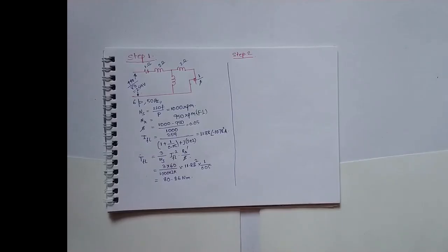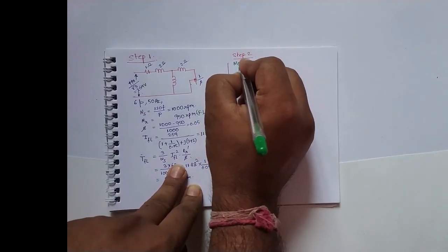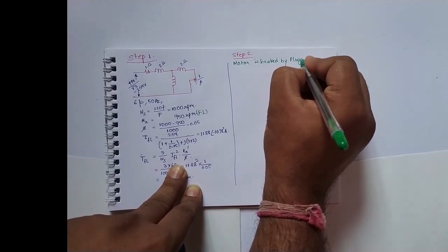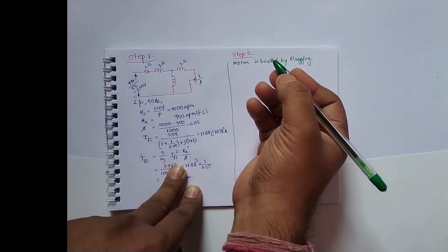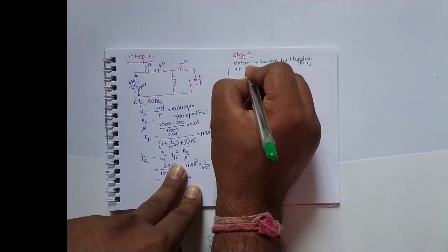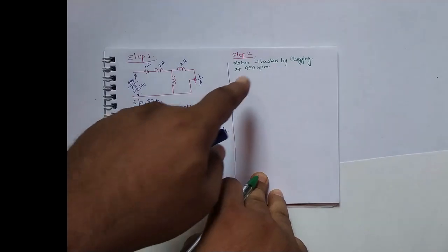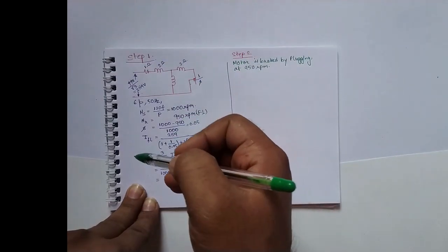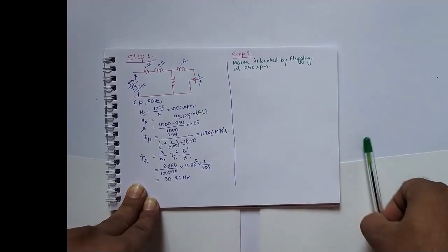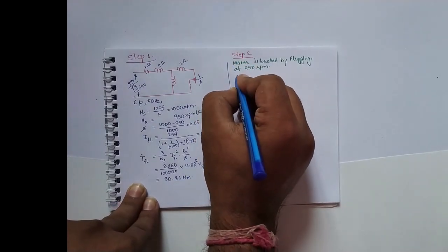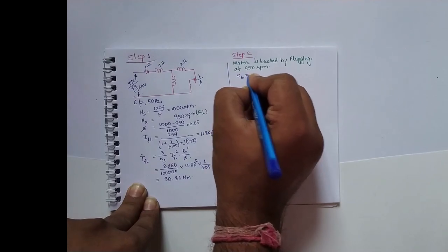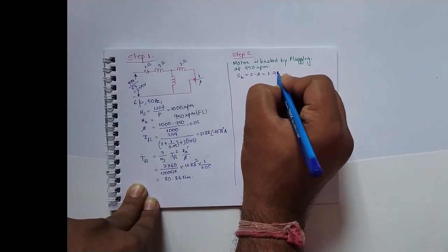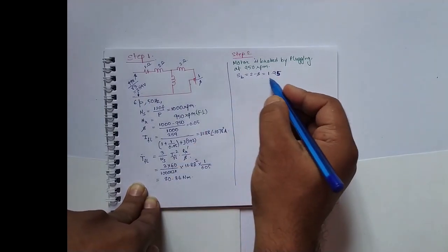In the next step, the motor is braked by the plugging method at 950 RPM. Before braking, the motor conditions were as established in step one. When braking by plugging occurs, the slip changes. The braking slip is 2 minus s, which equals 2 − 0.05 = 1.95.